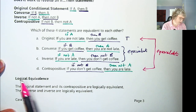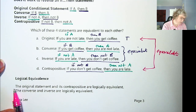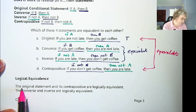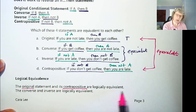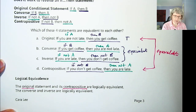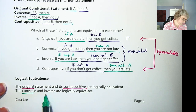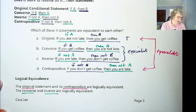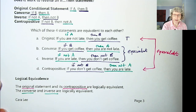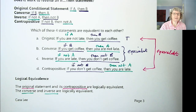To summarize: logical equivalents. The original statement and its contrapositive are logically equivalent — if one's true, the other's true; if one's false, the other's false. The converse and the inverse are logically equivalent — if one's true, the other's true; if one's false, the other's false. I hope you have a good time practicing that in your homework, and I'll see you in the next video.